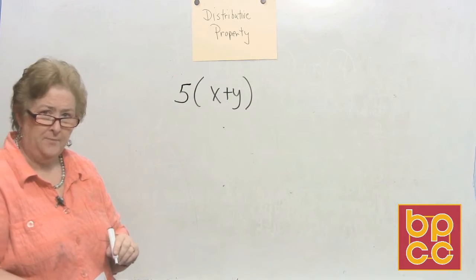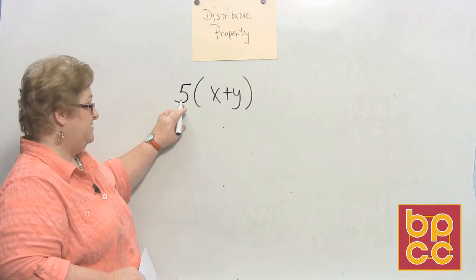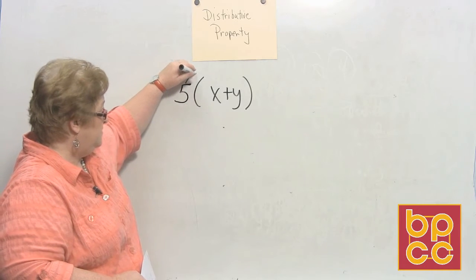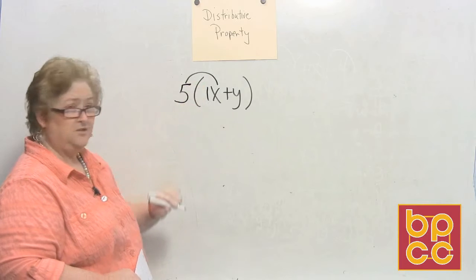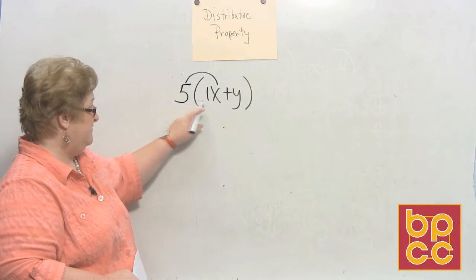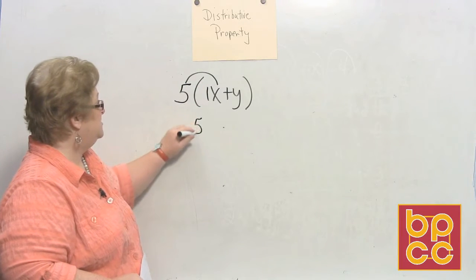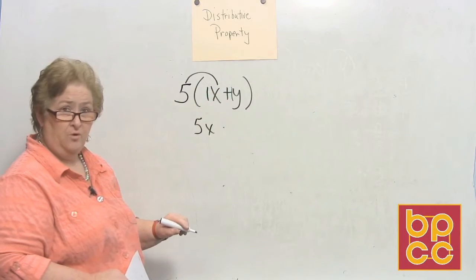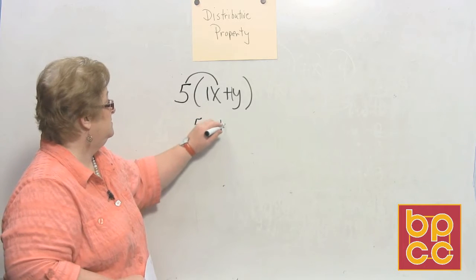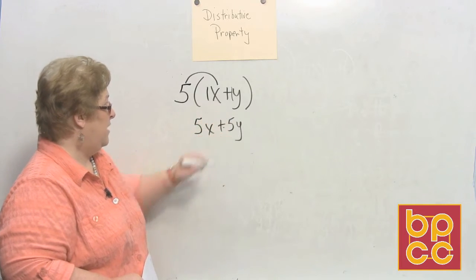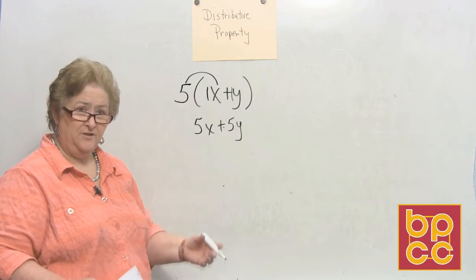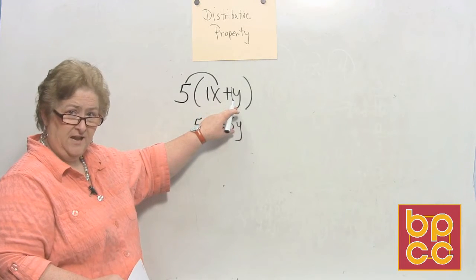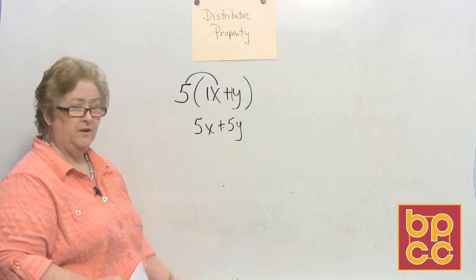The distributive property says take the outside number that's hugging the parentheses and multiply that number times your x, which keep in mind is a 1x. So 5 times 1x is 5x, and 5 times a positive 1y is 5y. I'm just trying to distribute the number on the outside to each of the variables on the inside, and we'll use this frequently as we do equations.